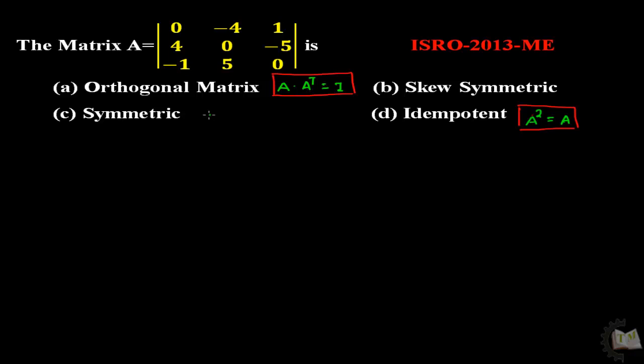Next, the symmetric matrix. This matrix says that matrix A equals the transpose of matrix A. For skew-symmetric, you simply add a negative sign in front of the original matrix. That is, A transpose equals negative A, and it is called a skew-symmetric matrix.